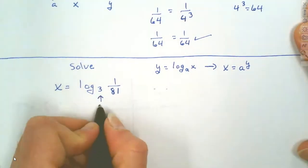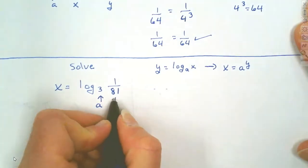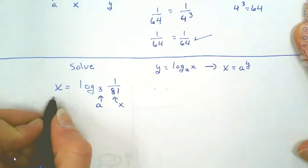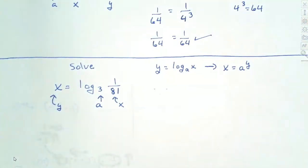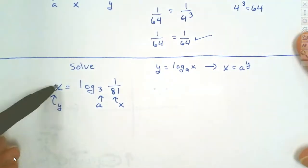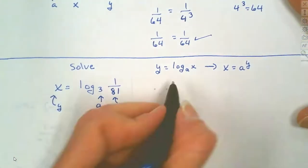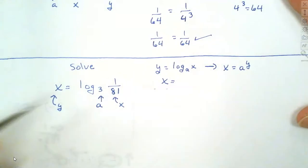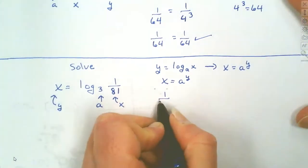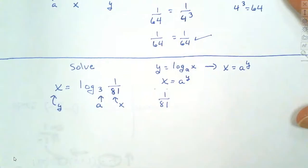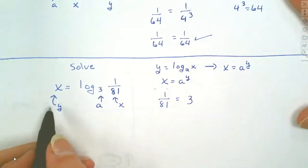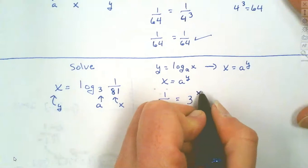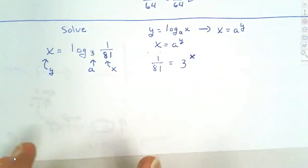The base is always your a, so that 3 is your a. The number inside your logarithm is your x, and y itself is the y. In this case, the y is going to be the x variable we're solving for. When we transform it, we want x equals a to the y power. So x is 1 over 81, our a is 3, and our y is x.